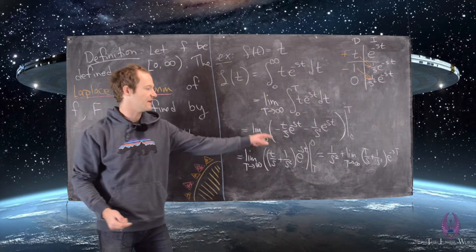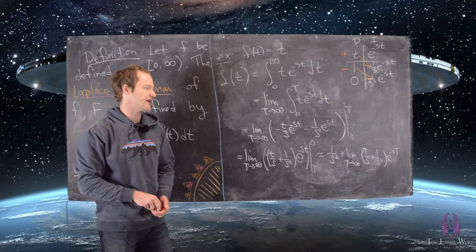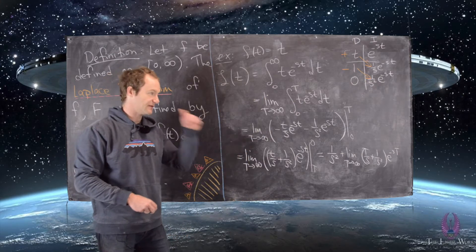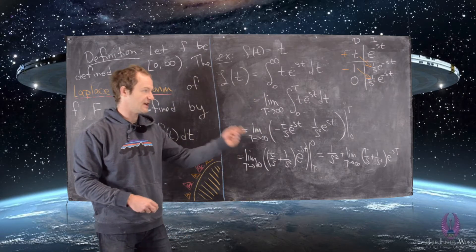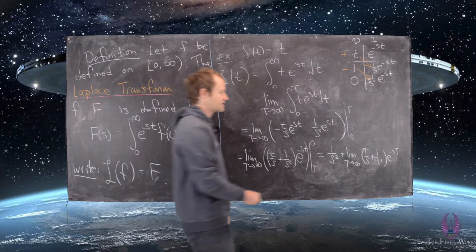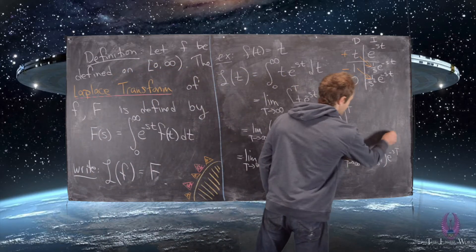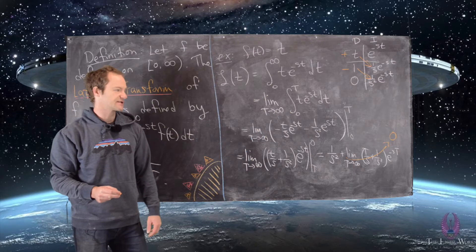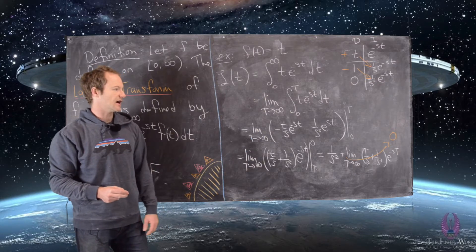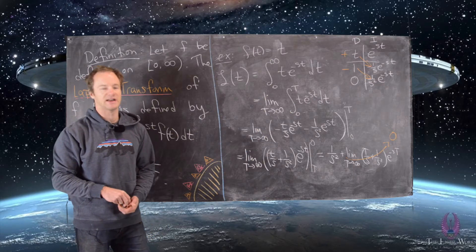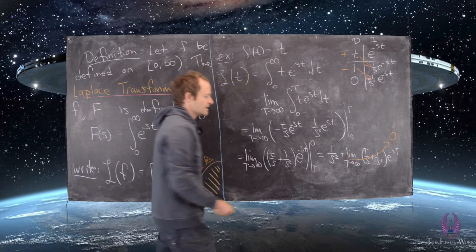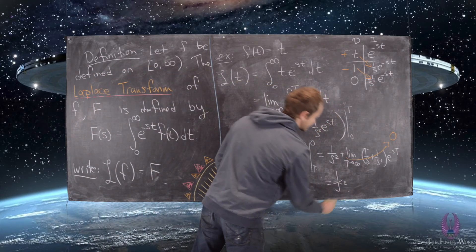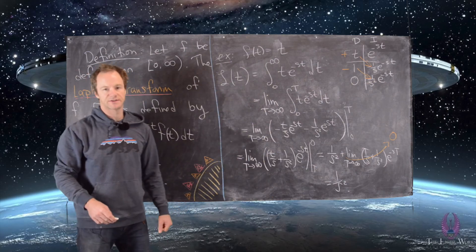That limit equals zero — you can use L'Hôpital's rule if needed, since it looks like infinity over infinity when you move the exponential to the denominator. But at this level, in differential equations with calculus 2 behind you, you should be very familiar with this type of limit. So we end up with one over s squared as the Laplace transform of t.